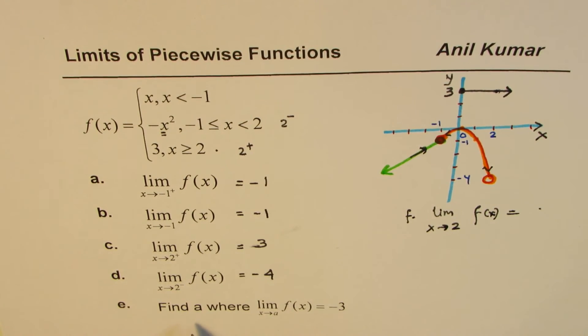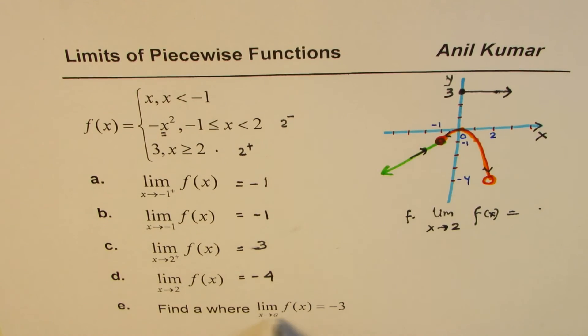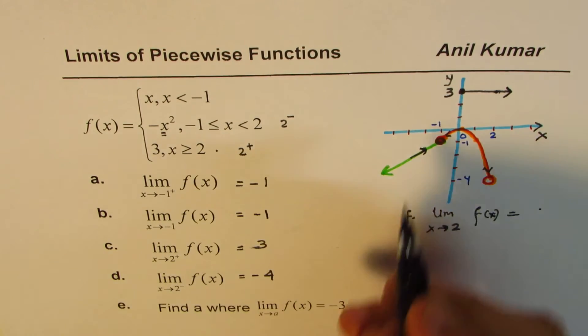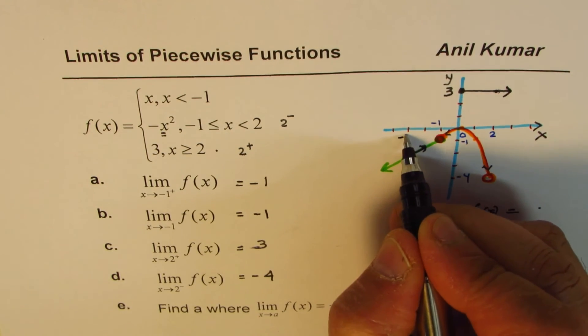The last question here is interesting. It says, find a where limit of function f(x) as x approaches a is -3. Now which is that point on this graph where the limit is -3? So it is 1, 2, 3. At -3,